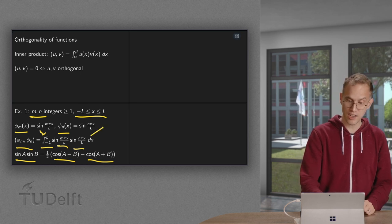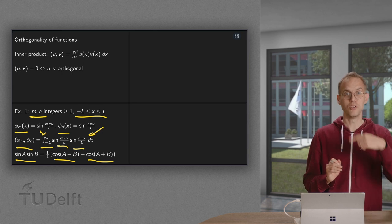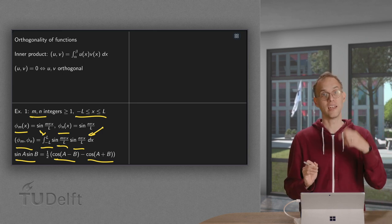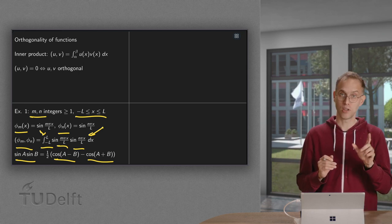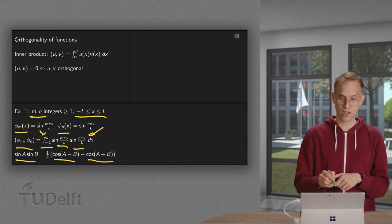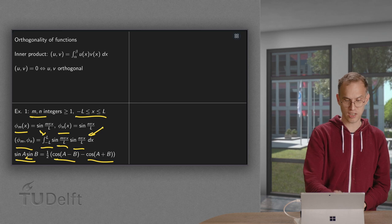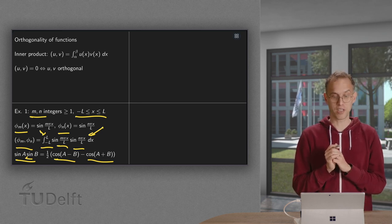Sine a times sine b equals cosine(a minus b) minus cosine(a plus b). So we can rewrite the integrand. If you want to check this, you can use the other formula. Like cosine(a minus b) equals cosine a times cosine b minus sine a sine b. It gives cos cos minus sine sine. The other one gives minus cos cos plus sine sine. Together it gives sine sine. That's how you can check this trigonometric formula.